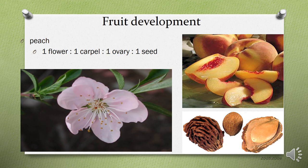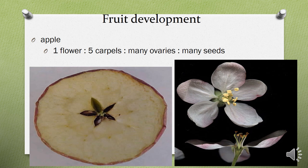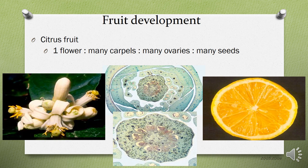Examples: Peach is a simple fruit — one flower, one carpel, one ovary, one seed. Apple is an aggregate fruit — one flower but five carpels, many ovaries, and many seeds. Citrus fruit is an example of multiple fruit — one flower but many carpels, many ovaries, and many seeds.